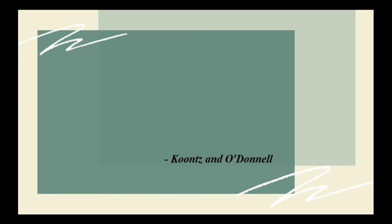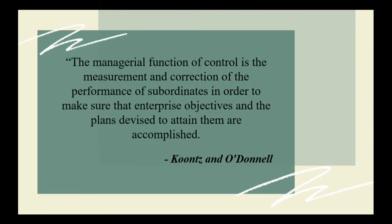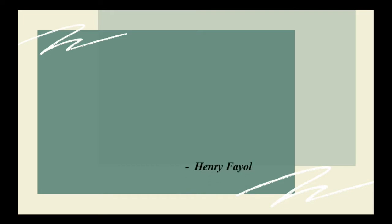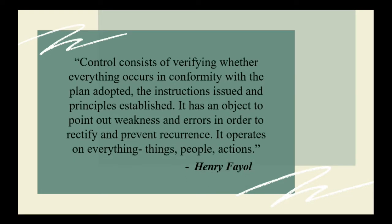According to Koontz and O'Donnell, the managerial function of control is the measurement and correction of the performance of subordinates in order to make sure that enterprise objectives and the plans devised to attain them are accomplished. According to Henry Fayol, control consists of verifying whether everything occurs in conformity with the plan adopted, the instructions issued, and principles established. It has an objective to point out weakness and errors in order to rectify and prevent recurrence. It operates on everything — things, people, and actions.